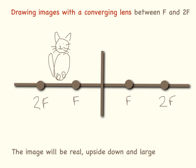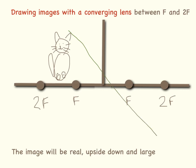Primrose has moved along again — she is now between F and 2F. Exactly the same rules apply: we go from the top of Primrose through the middle of the lens, then across and through the focal point. This time the image is real, upside down, and — if I draw my lines correctly — would be larger than the original image.